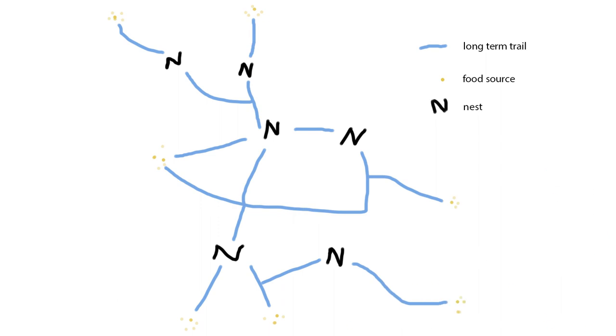The next strategy we have is long-term trail network. Basically, it's a network of chemical trails lasting for months or years, linking nest or temporarily persistent food sources.